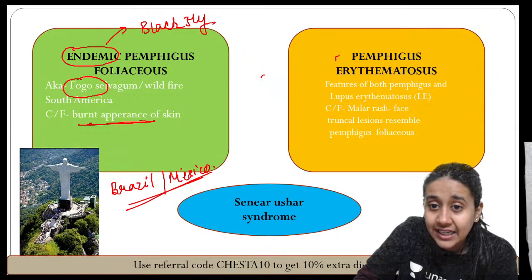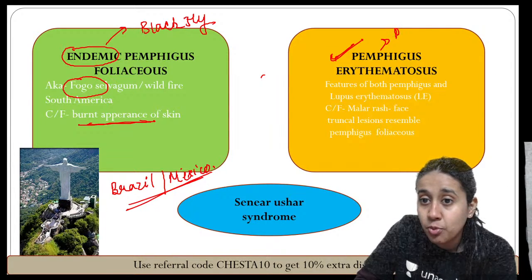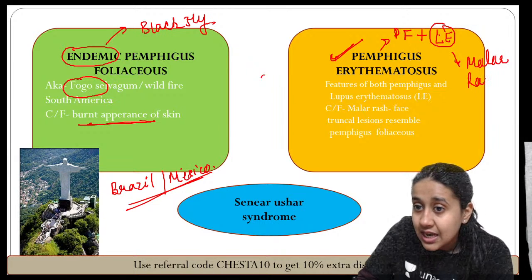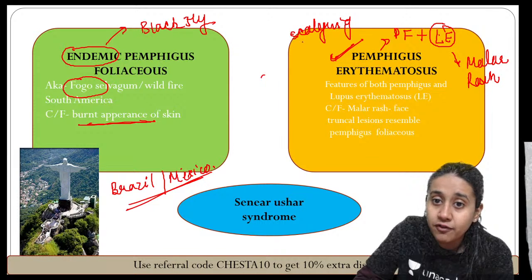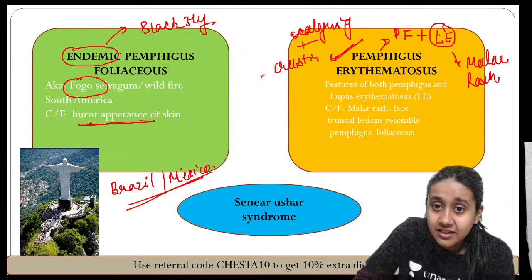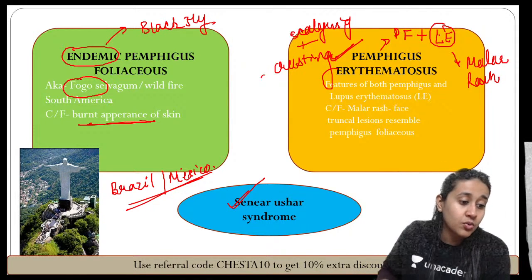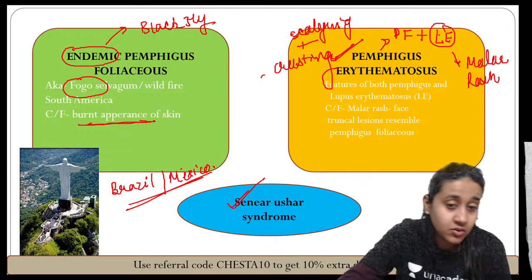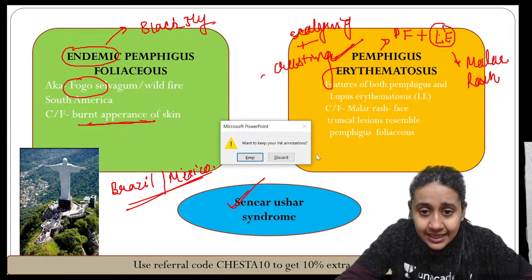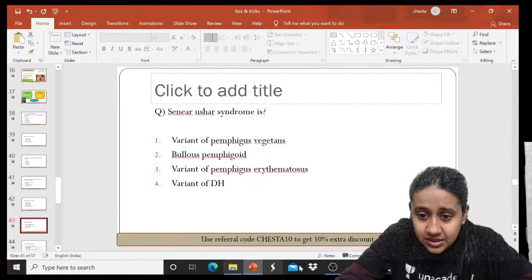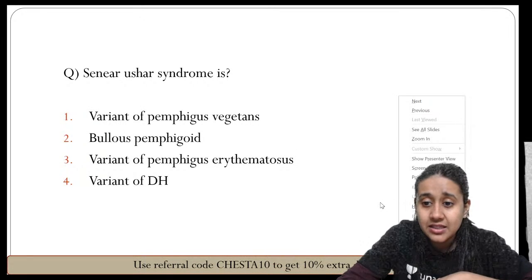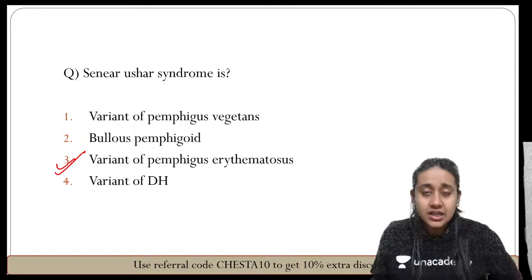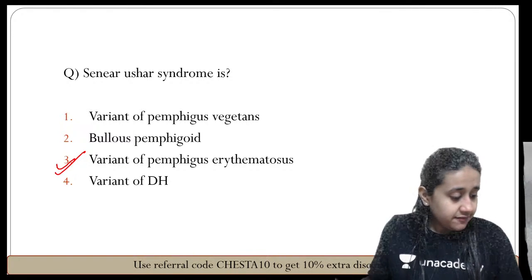Pemphigus erythematosus has features of both pemphigus foliaceous and lupus erythematosus — presenting with a malar rash of lupus erythematosus and scaling and crusting over the seborrheic distribution. A variety of pemphigus erythematosus is called Senear-Usher syndrome. These names can be asked in your exams.